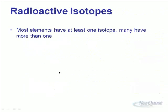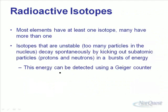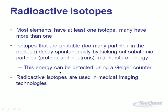Isotopes are common — most elements have at least one, and many have more than one. Isotopes that are unstable occur when too many particles are in the nucleus; it becomes unstable and starts emitting particles and energy, which can be detected by a Geiger counter. These radioactive isotopes are often used in medical imaging technologies.